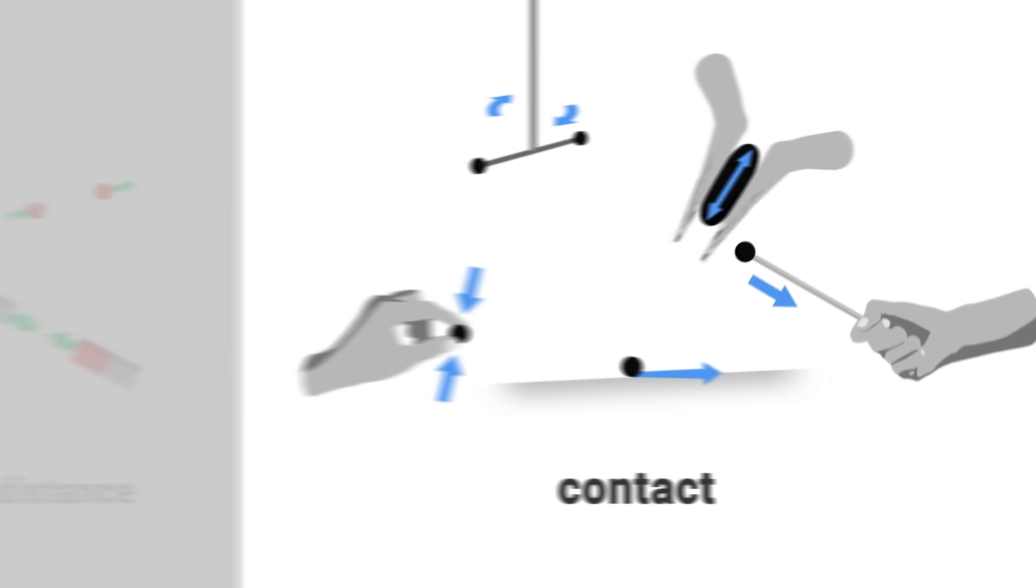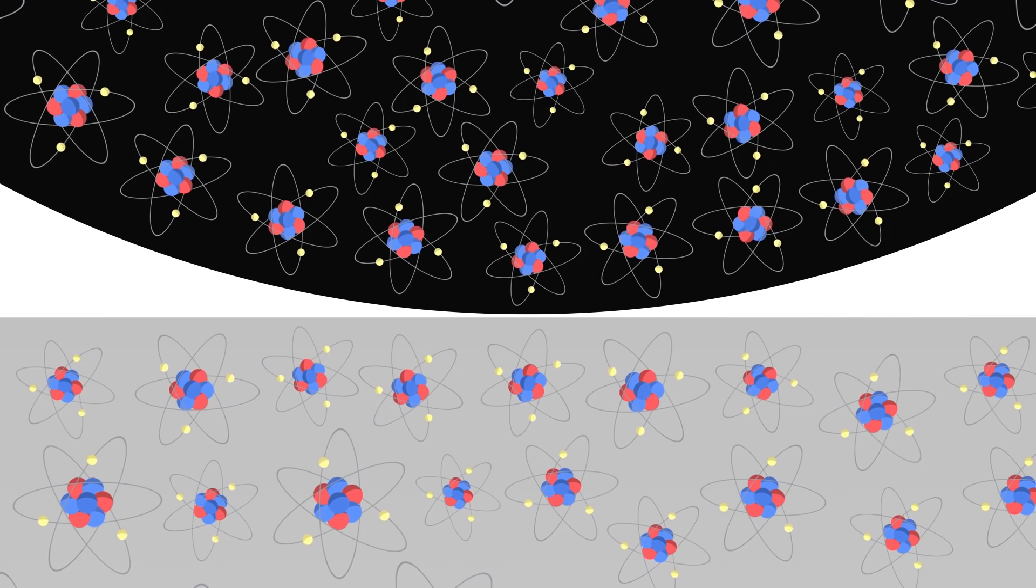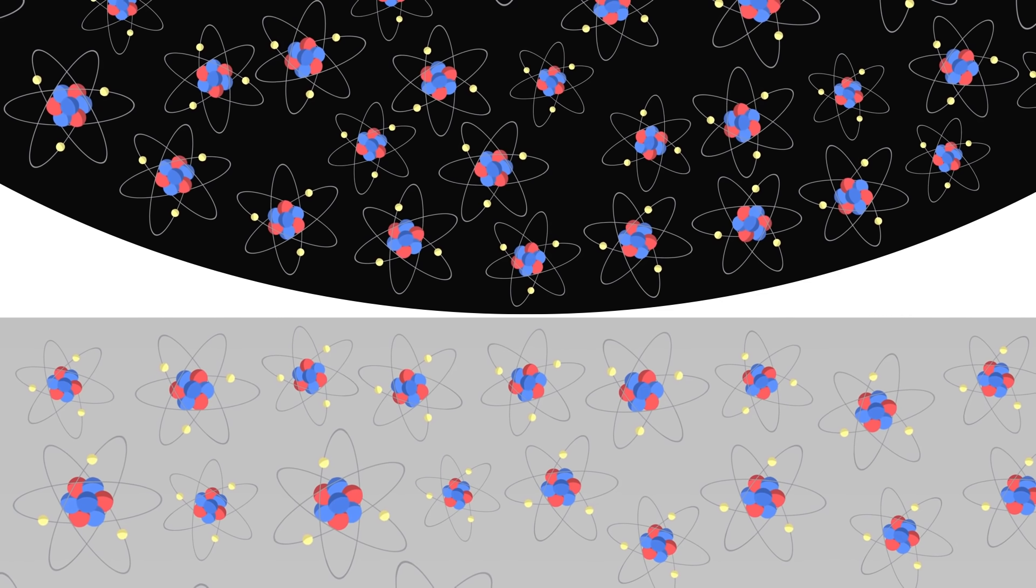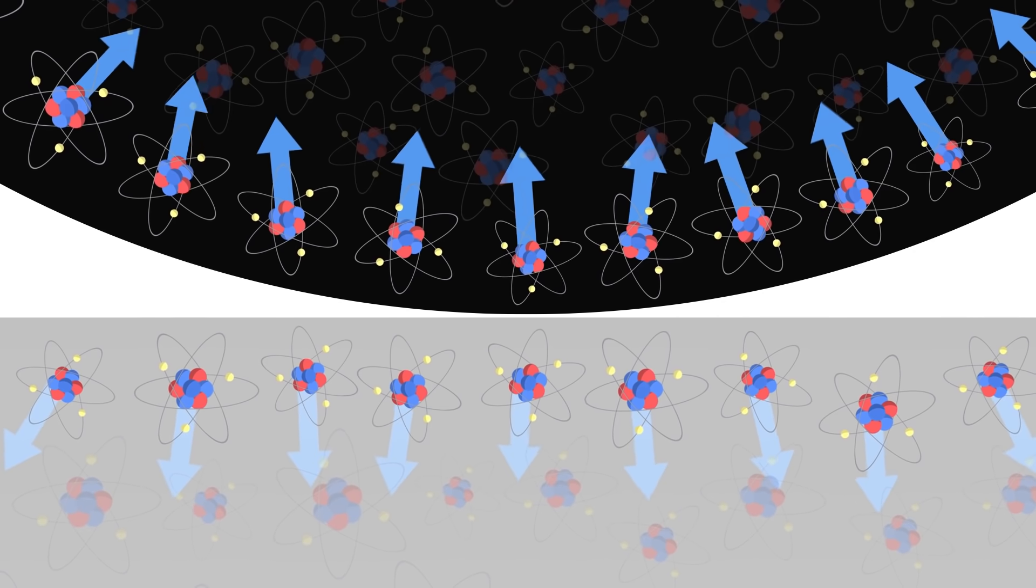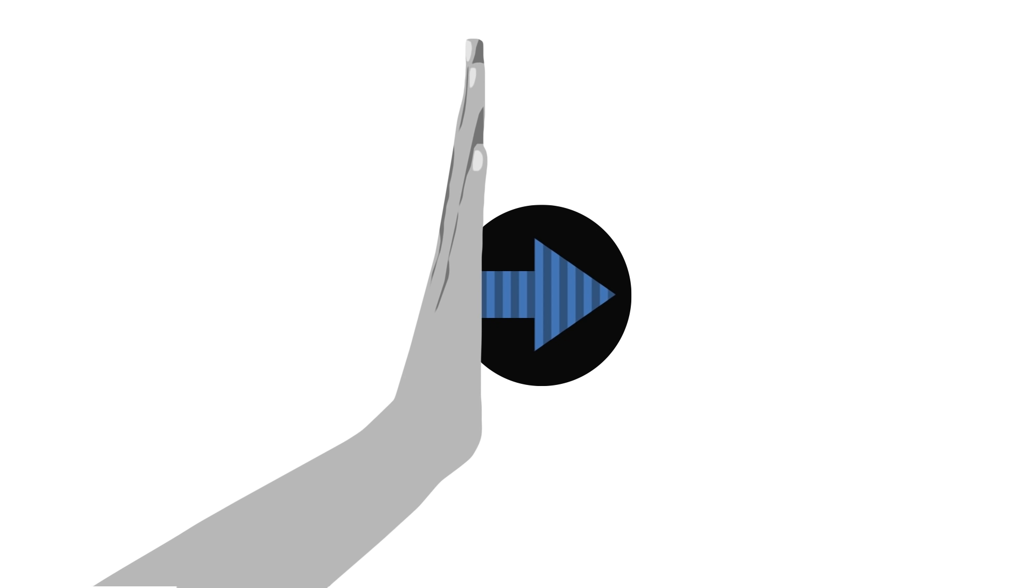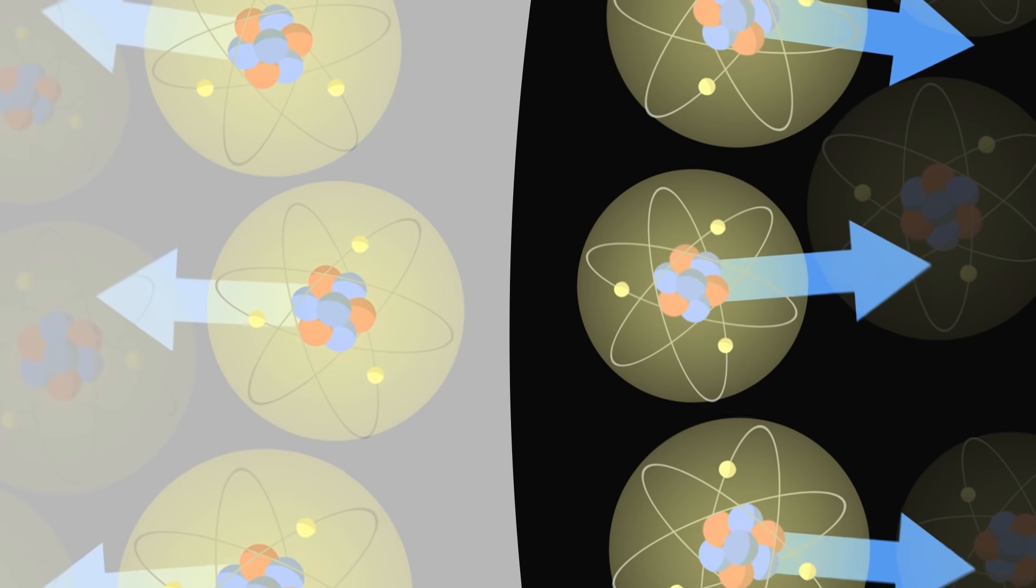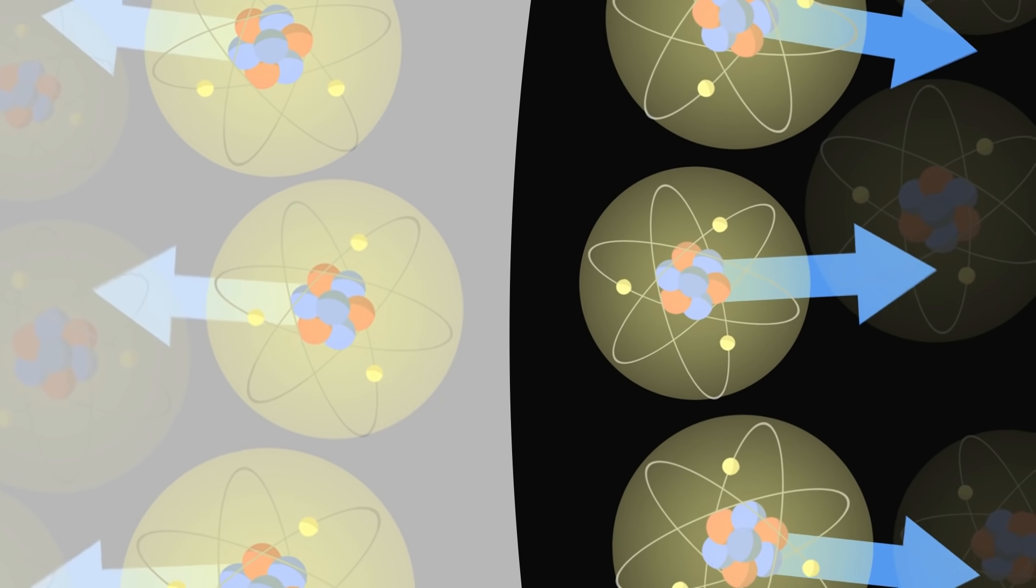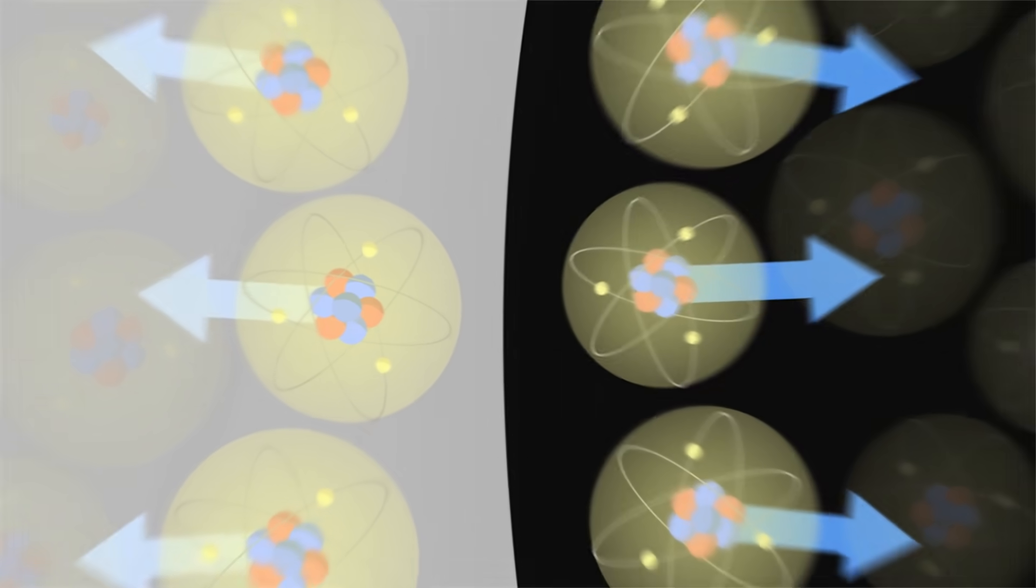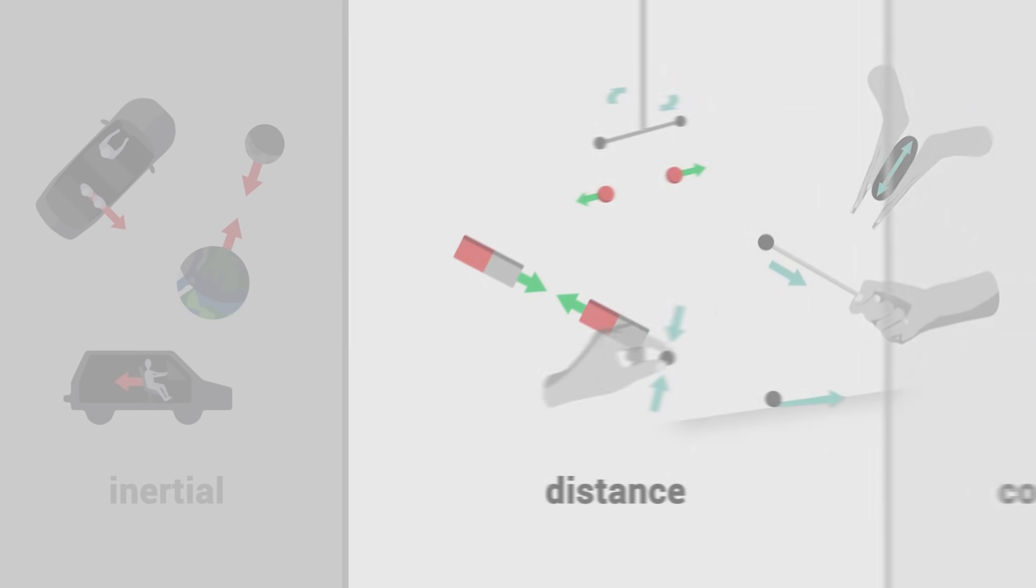But if we think about it, contact forces are only approximations. In reality, the matter that makes an object is made up of atoms. When we observe a contact force at our scale, it is really an interaction between the atoms of each of the two objects. When we push an object, for example, the contact force does not really exist. It is only the sum at our scale of all the electromagnetic forces in play that repel electrons, and therefore atoms, between our hand and the object. Ultimately, contact forces are nothing more than the manifestation at our scale of the electromagnetic force.